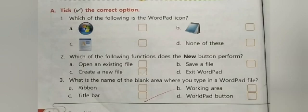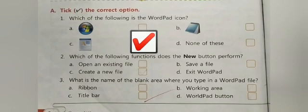Here three icons are given and the fourth option is none of these. So out of the three options A, B, C, C is the correct option. C is the WordPad icon.